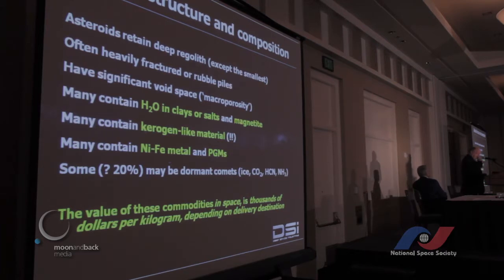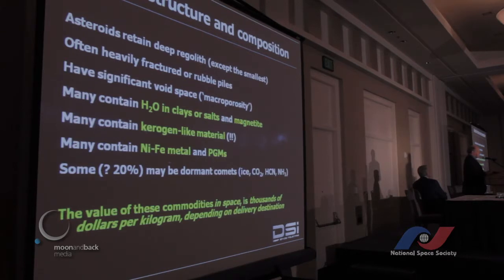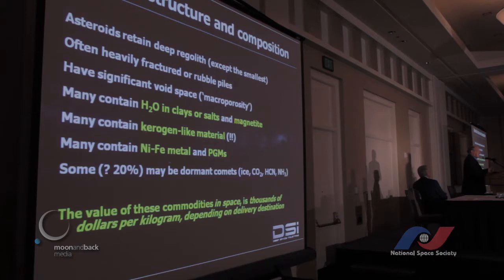So we've got this plethora of potentially usable material. The value of these commodities in space is thousands of dollars per kilogram because the value is competing against launch cost. Any of these materials that can be separated out and delivered to low Earth orbit or geostationary orbit for use there are competing against Earth launch costs. Present Earth launch costs range from $10,000 upwards in low Earth orbit, $40,000 or so in GEO. Thousands of dollars per kilogram is the potential value of materials extracted from these objects.